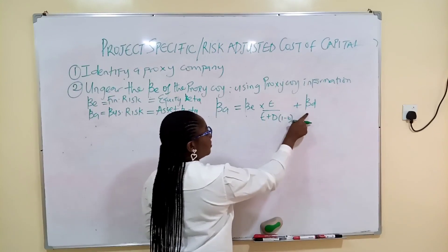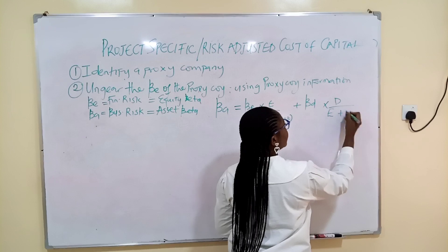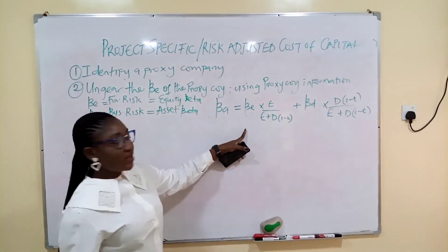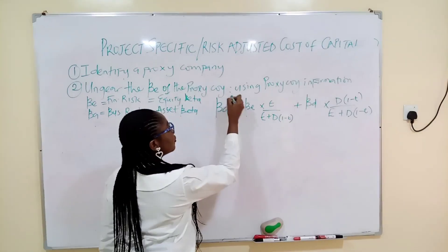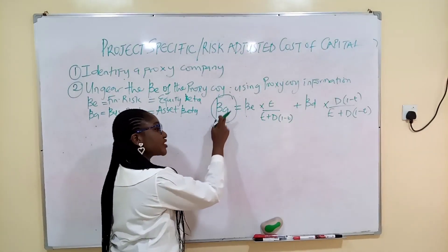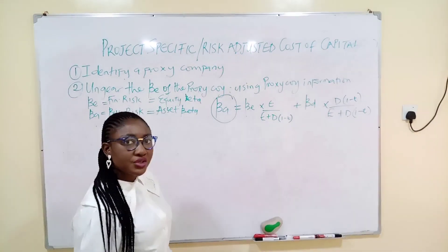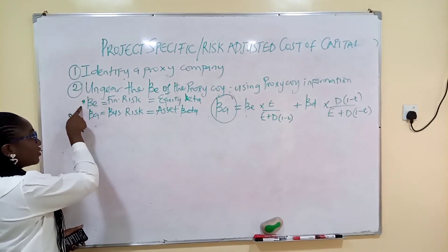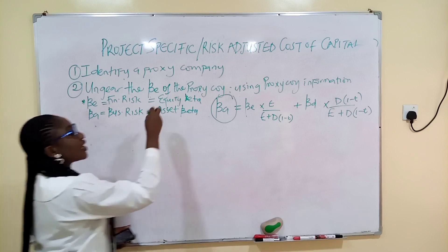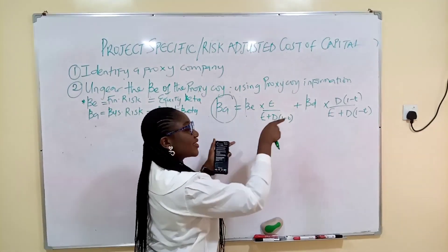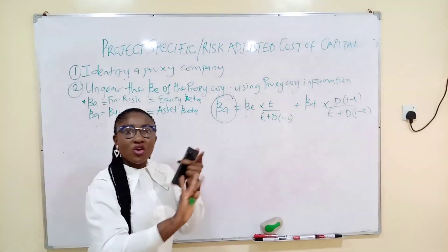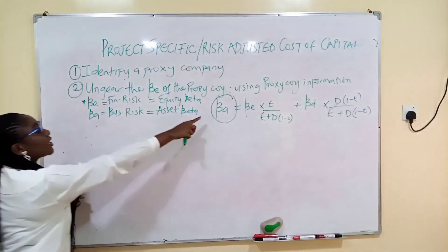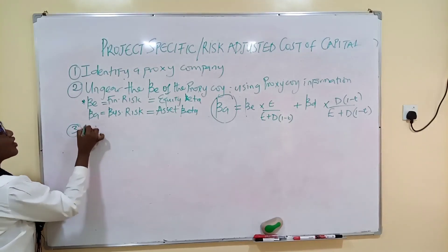This is the ungearing formula. When you ungear, you've gotten the risk associated with the business that the company is going into — the asset beta. In some questions they might give you that risk directly; in other questions they'll give you the equity beta, which is the finance risk, and you'll need to remove the debt element from it. That's what ungearing means — it has nothing to do with the capital structure of the proxy company.